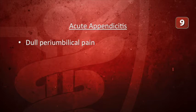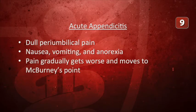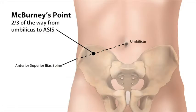The classic presentation of acute appendicitis is dull periumbilical pain followed by nausea, vomiting, and anorexia. Then the pain gradually gets worse and moves to the right lower quadrant, to an area called McBurney's point. McBurney's point is located in the right lower quadrant one-third of the way from the ASIS to the umbilicus — or two-thirds of the way from the umbilicus to the ASIS. The initial periumbilical pain occurs because the afferent pain fibers enter the spinal cord at T10, which innervates the umbilicus.